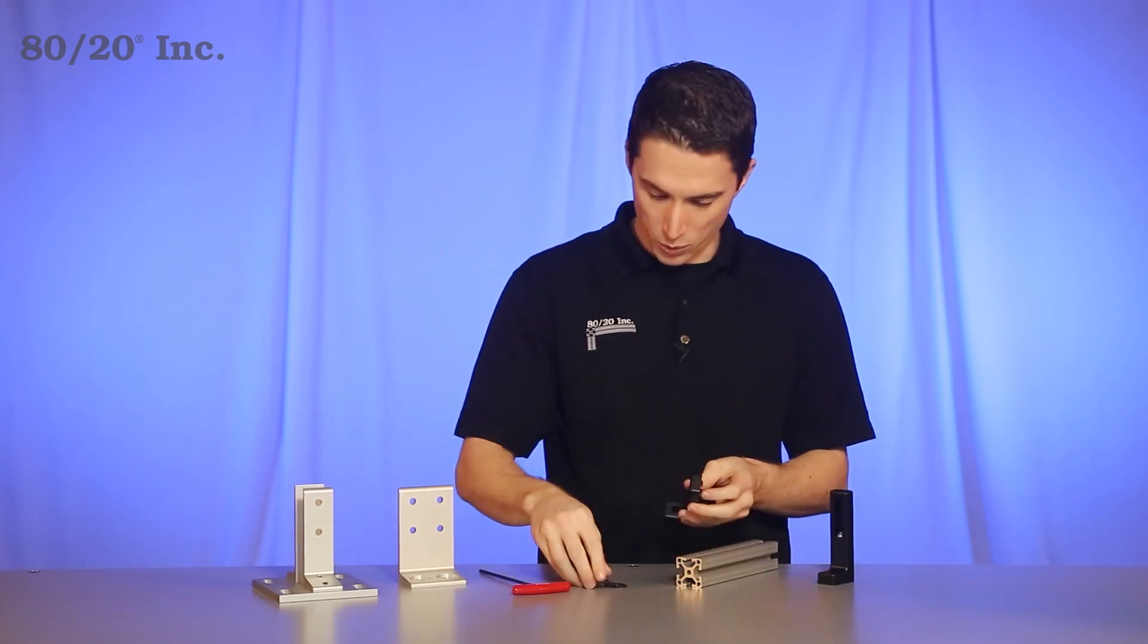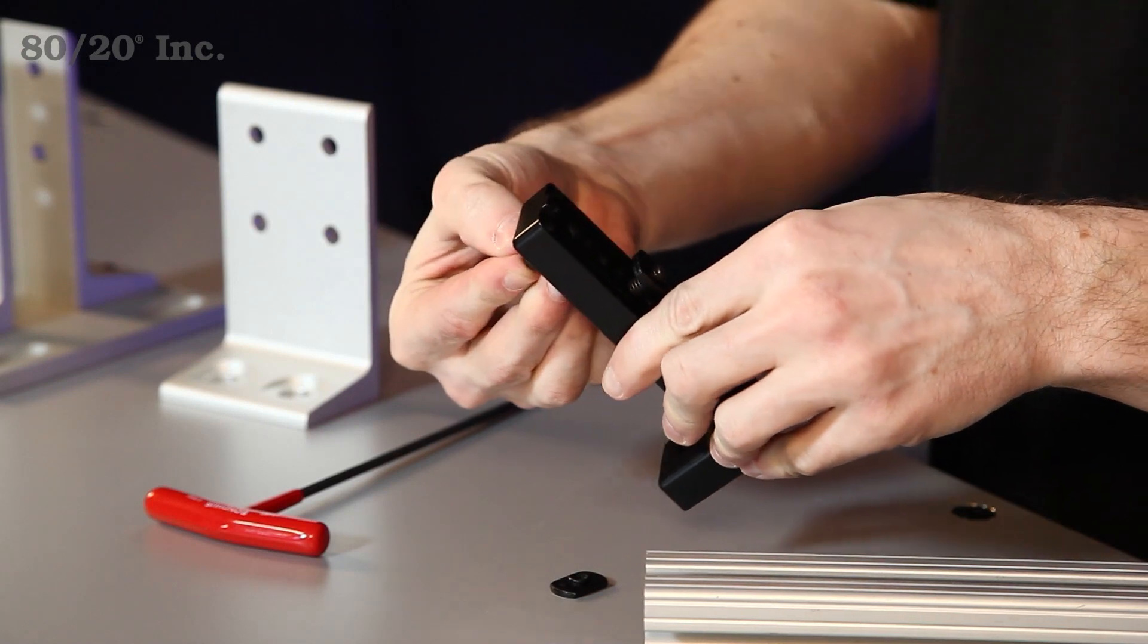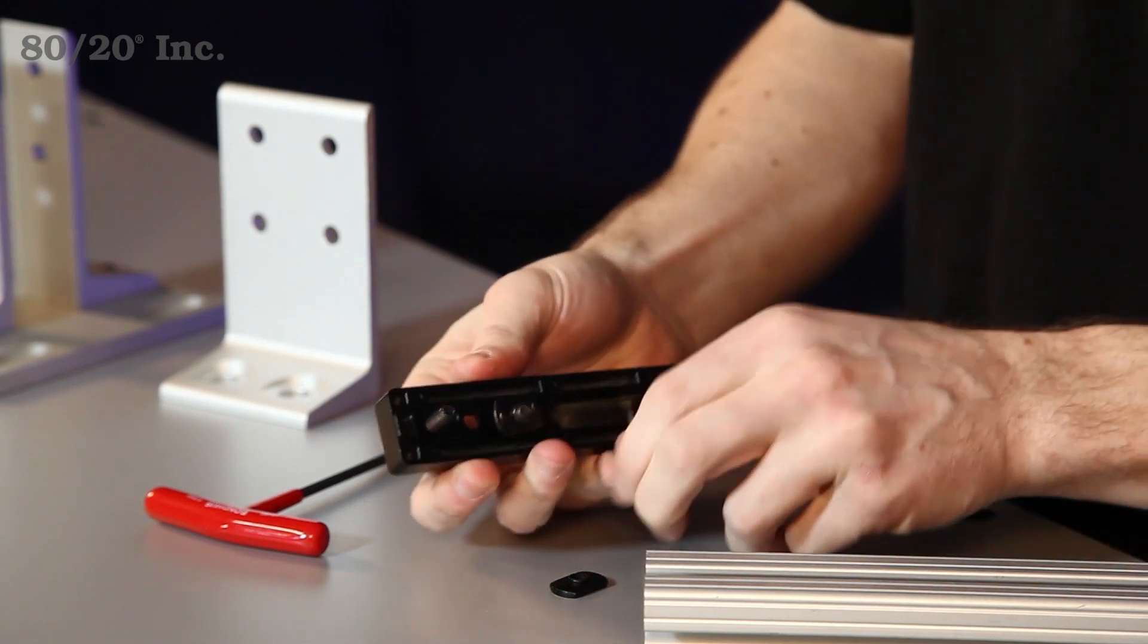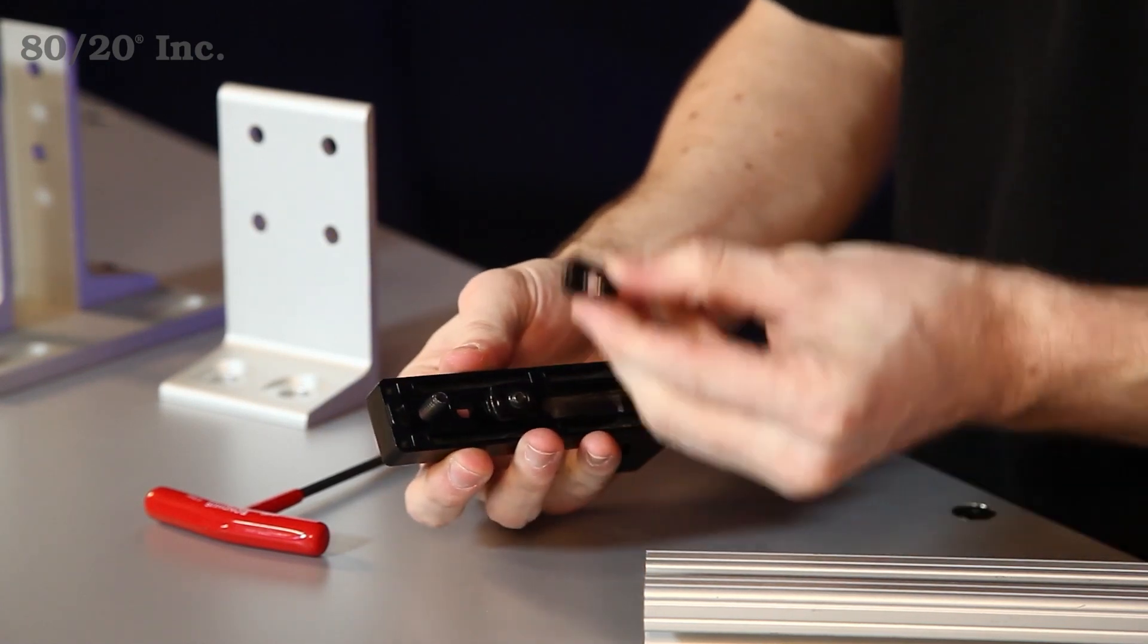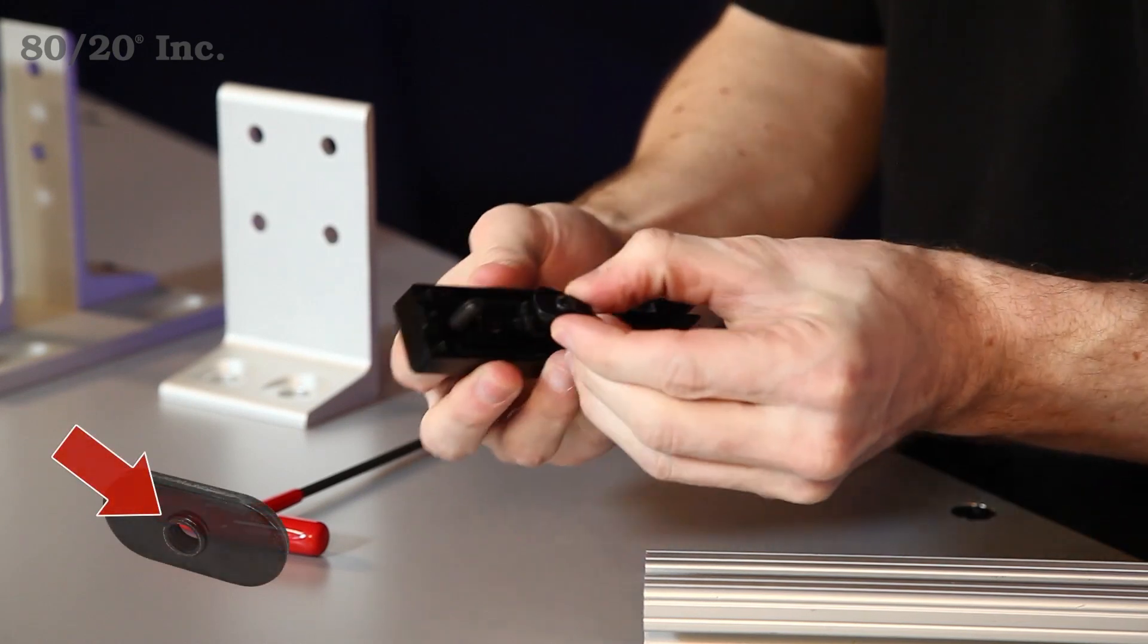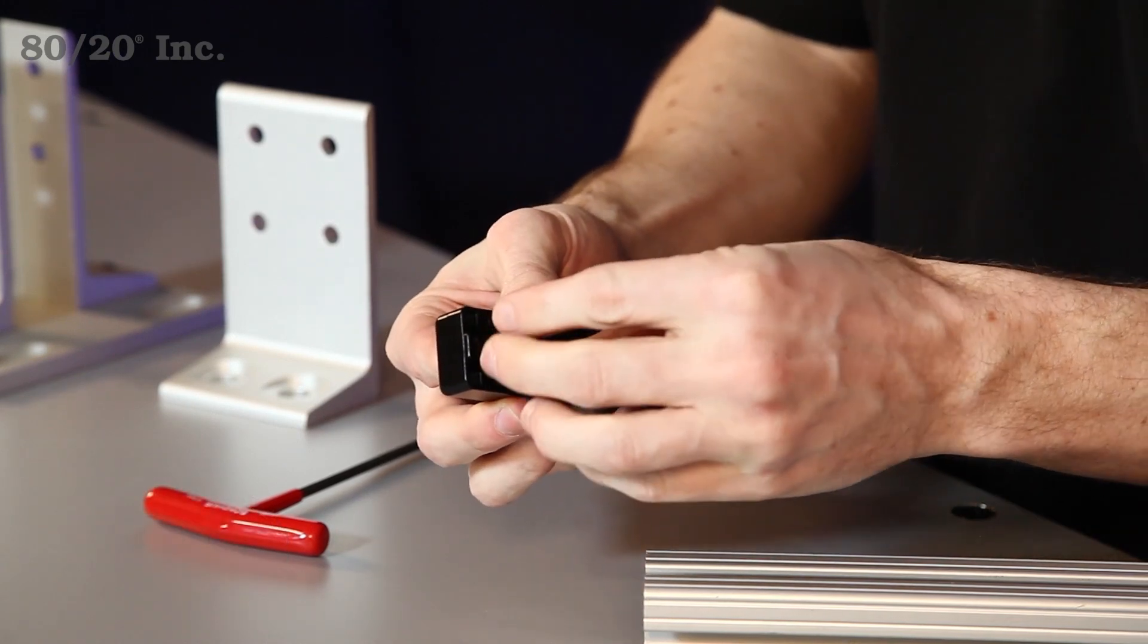We're just going to finish it up with one last bolt and one last T-nut. You want to make sure with the T-nut you have the pilot projection on it facing away from the bracket. We'll just pre-load that onto the bolt there.